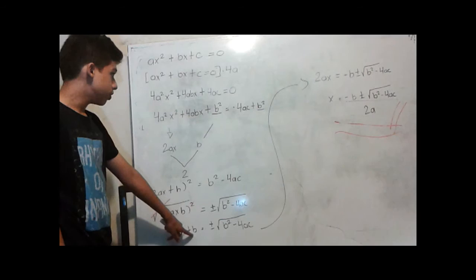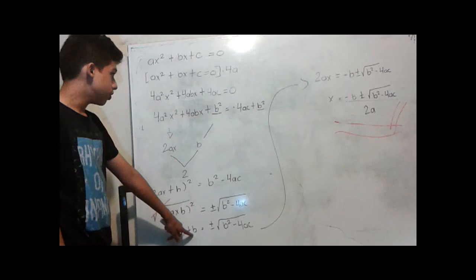b is adding so we pass it to subtract on this side. We have to isolate the variable x, and since it's multiplying we have to divide. And this is the quadratic formula! Thank you so much!